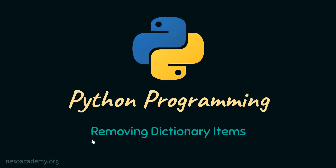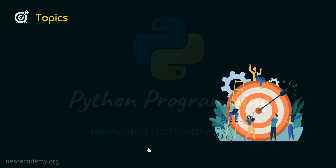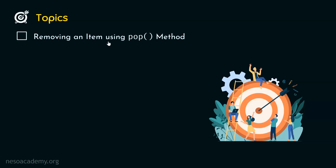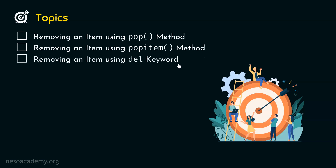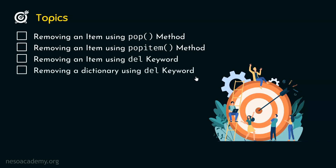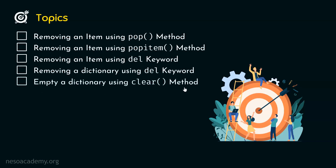In this presentation, we will understand how to remove dictionary items. The first topic is removing an item using the pop method. The second topic is removing an item using the popitem method. The third topic is removing an item using the del keyword. The fourth topic is removing a dictionary using the del keyword. And the fifth topic is emptying a dictionary using the clear method.